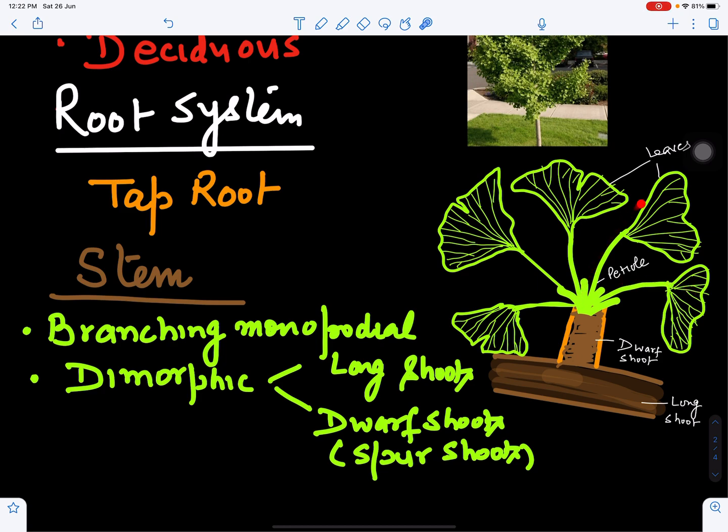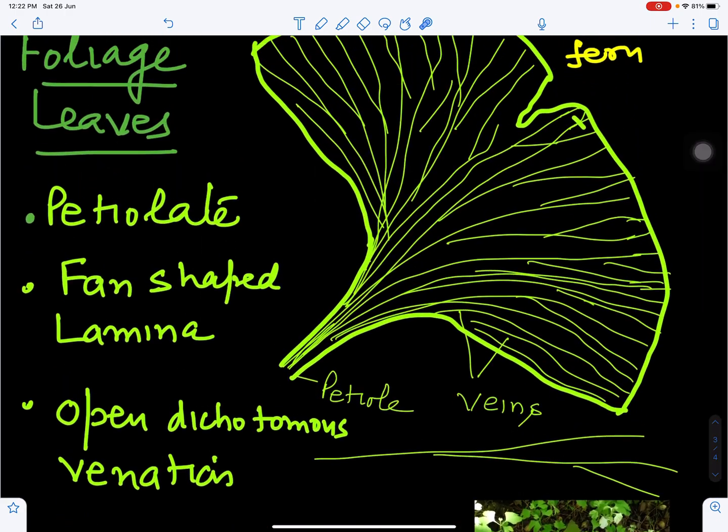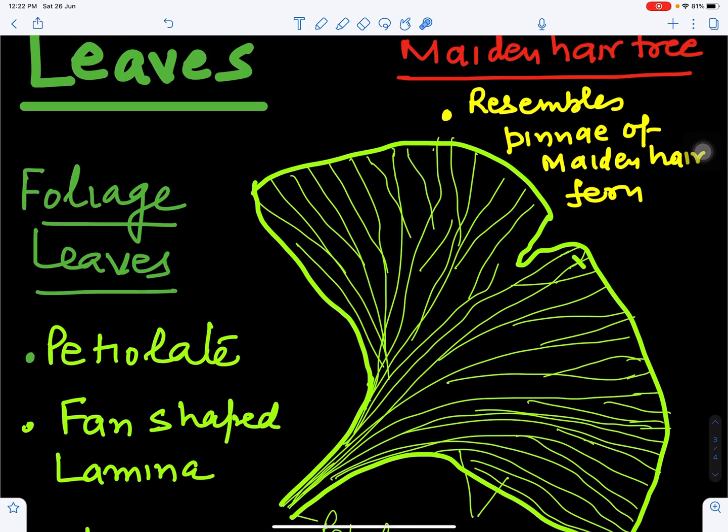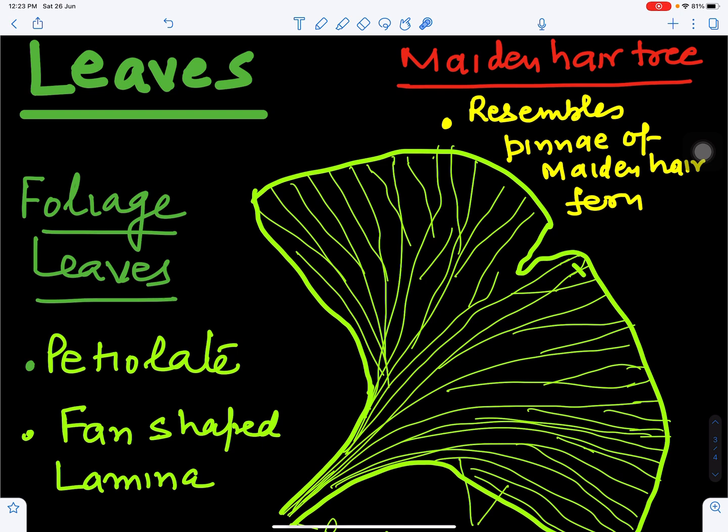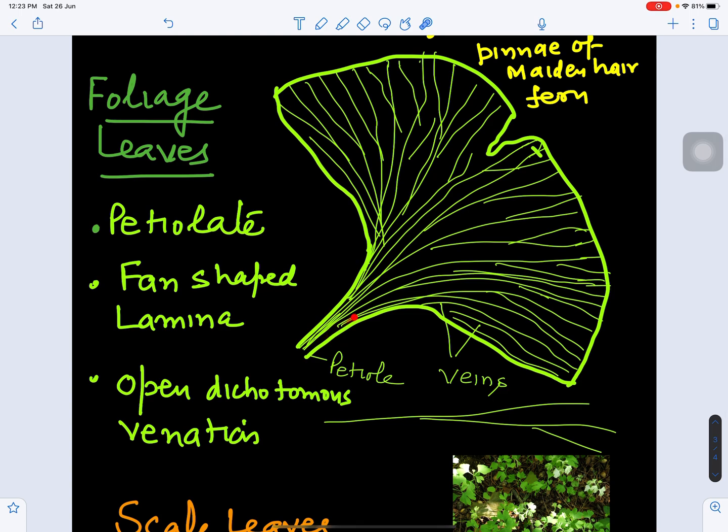Leaves in case of Ginkgo biloba are of two types: foliage leaves and scale leaves. Leaves resemble the pinna of maidenhair fern Adiantum, so it is also called maidenhair tree. Foliage leaves are petiolate with petiole and lamina. The lamina is fan-shaped and the venation pattern is dichotomous, where one vein divides into two. This is open dichotomous venation.